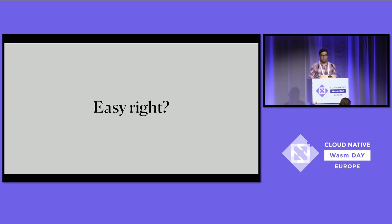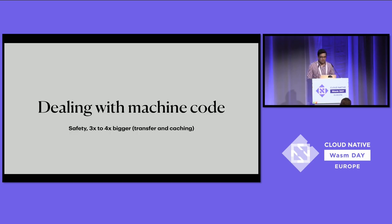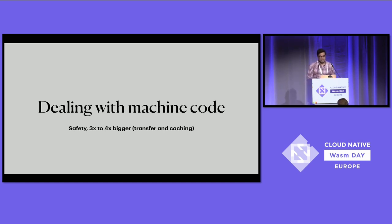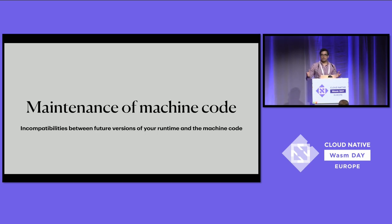In Shopify's case, we've identified several downsides of the AOT approach. The first is that dealing with machine code is inherently unsafe — you have to treat it with care. It's also important to note that when you compile WebAssembly to machine code, you get a three or four times size increase, making your code more difficult to transfer and cache. The second con is maintenance: if your runtime doesn't maintain compatibility on new versions for older machine code, you potentially have to recompile everything, introducing more overhead.